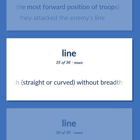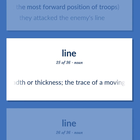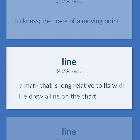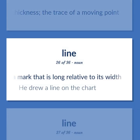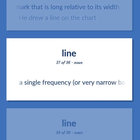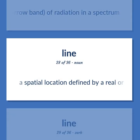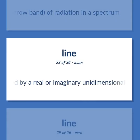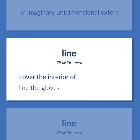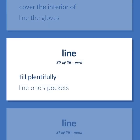A length, straight or curved, without breadth or thickness. The trace of a moving point. A mark that is long relative to its width. He drew a line on the chart. A single frequency, or very narrow band, of radiation in a spectrum. A spatial location defined by a real or imaginary unidimensional extent. Cover the interior of. Line the gloves. Fill plentifully. Line one's pockets.